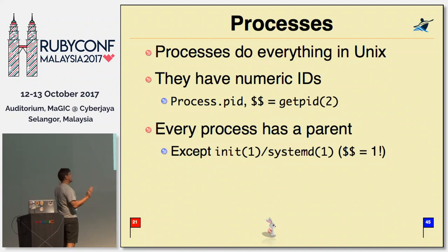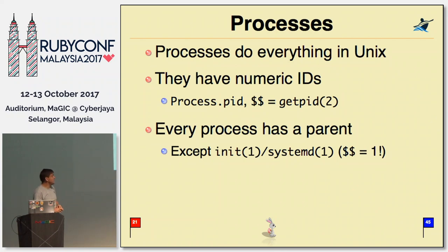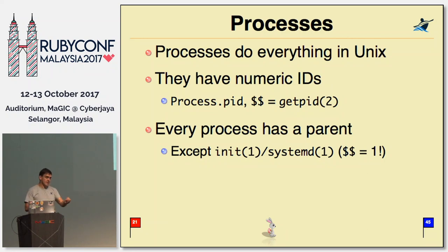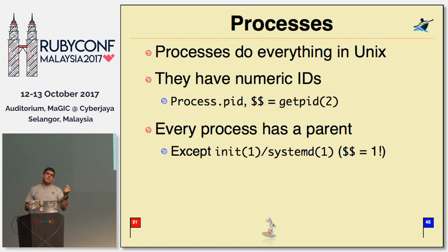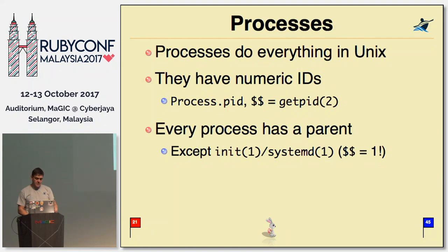Processes do everything in Unix — the kernel is there to offer its help, but the processes do everything. Every process has a numeric ID, accessible via Process.pid or $$ — part of the great legacy of Perl magic variables that always send you to a man page. Every process has a parent. The only process where that's not true is the one process called systemd or init, with process ID 1, started by the kernel, which starts everything else.